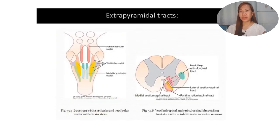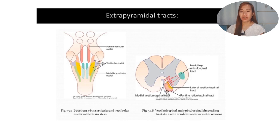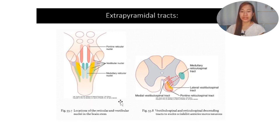Now for the extrapyramidal tracts. In this figure, we can see the medullary reticulospinal tract, the lateral vestibulospinal tract, and the pontine reticulospinal tract. The pontine reticulospinal tract starts from the pontine reticular nuclei and ends in the spine. We also have the vestibulospinal tract - from the vestibular nuclei, motor signals terminate at the level of the spinal cord. The medullary reticulospinal tract goes from the medullary reticular nuclei and ends in the spinal cord.